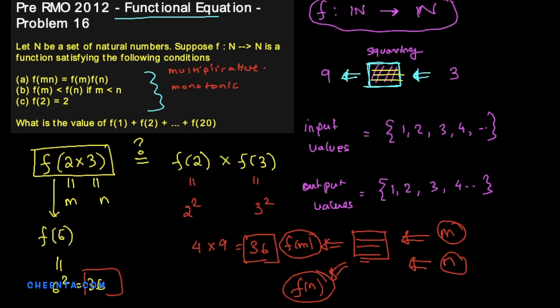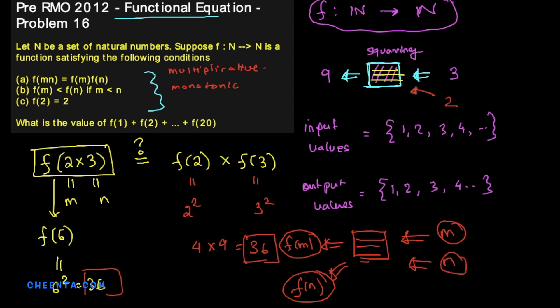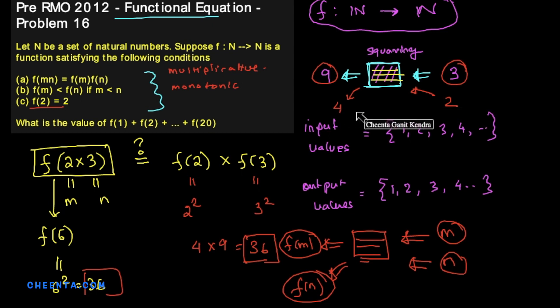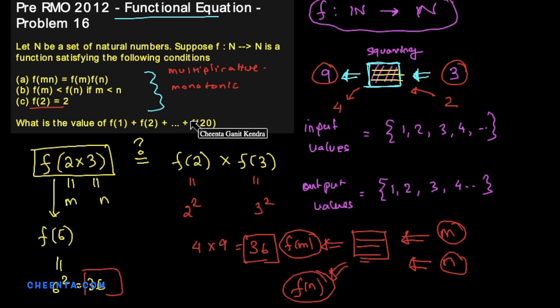The monotonic condition is also satisfied by the squaring machine: squaring a smaller number gives a smaller output. The third condition is much simpler — it just says f(2) = 2, and that throws the squaring function out of the list. If you input 2, the output would be 4, not 2. So we need to think about some other function. What we need to find is f(1) + f(2) + ... + f(20).